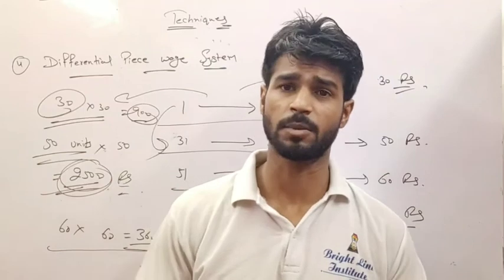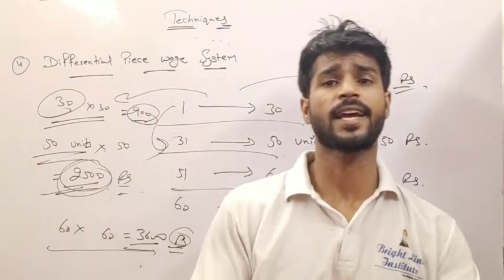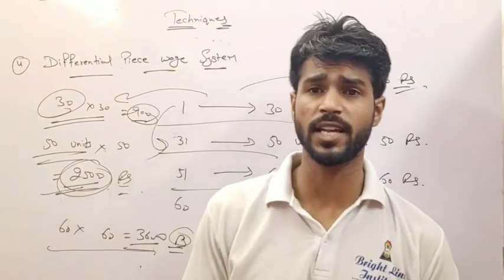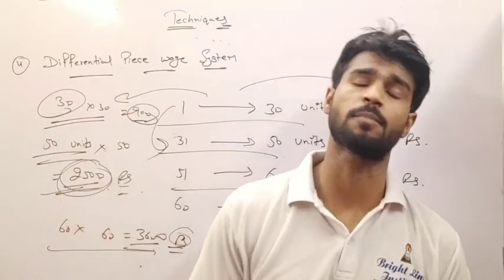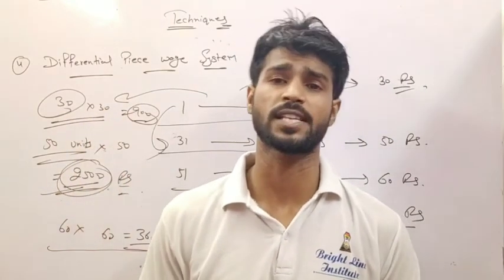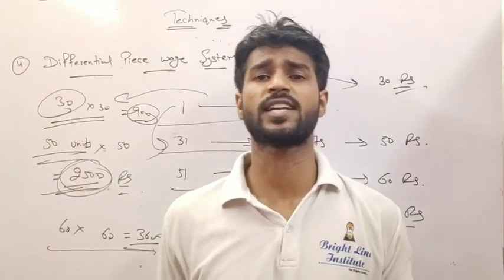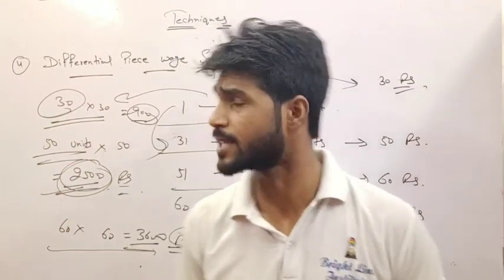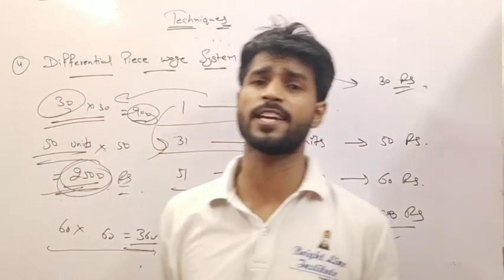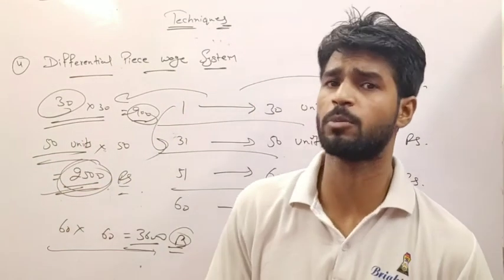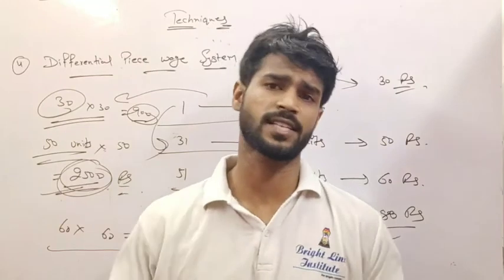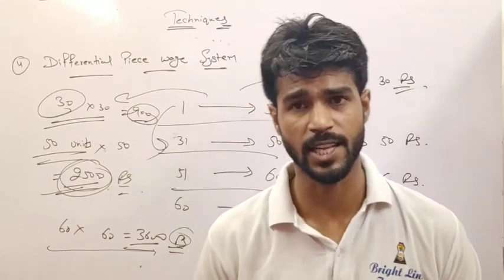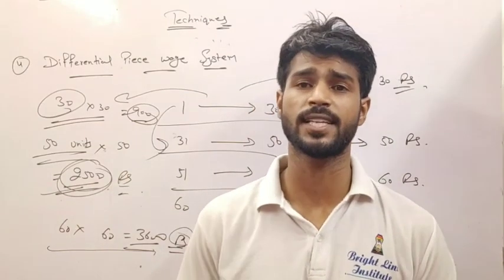These were your techniques. First, we discussed functional foremanship. Second, standardization and simplification. Third, work study. Fourth, differential piece rate system. These are all your important techniques. If there are any case studies, you will be asked which technique is used — do you understand? This was your scientific management. In the last class, we discussed the principles; in this class, we have completed the techniques. Now we will move to the next class, which is the third unit. Note them, remember them, and prepare them. Thank you.